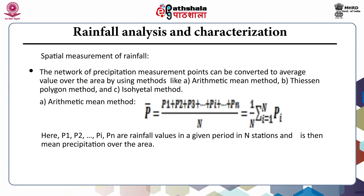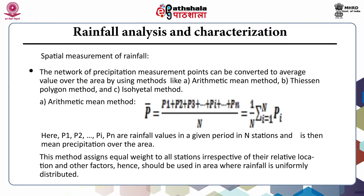In the arithmetic mean method, the arithmetic mean of the precipitation for all the stations within the area is computed. Since this method assigns equal weight to all stations irrespective of their relative location and other factors, it should be used in areas where rainfall is uniformly distributed. If P1, P2, P3, ..., PN are rainfall values in a given period at N stations within the defined area, then mean precipitation P̄ = (P1 + P2 + P3 + ... + PN) / N = (1/N) Σ(i=1 to N) Pi.